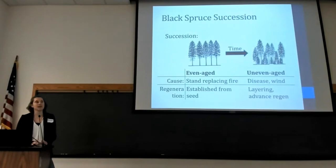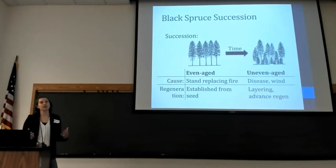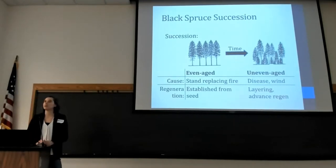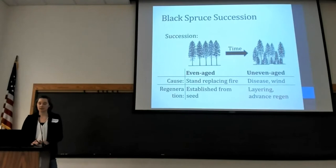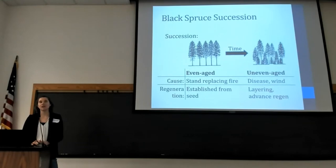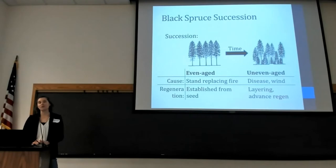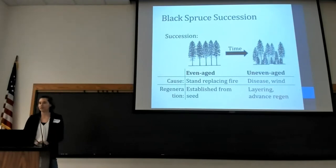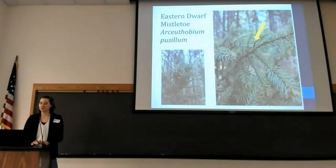When we think about the stand dynamics and successional dynamics of black spruce, we can come back from a stand-replacing disturbance — historically fire, now clear-cut. We can move from an even-aged stand to an uneven-aged stand, with a big part of that being windthrow with these very shallow-rooted species, and also disease — and that's where we'll get into eastern spruce dwarf mistletoe.